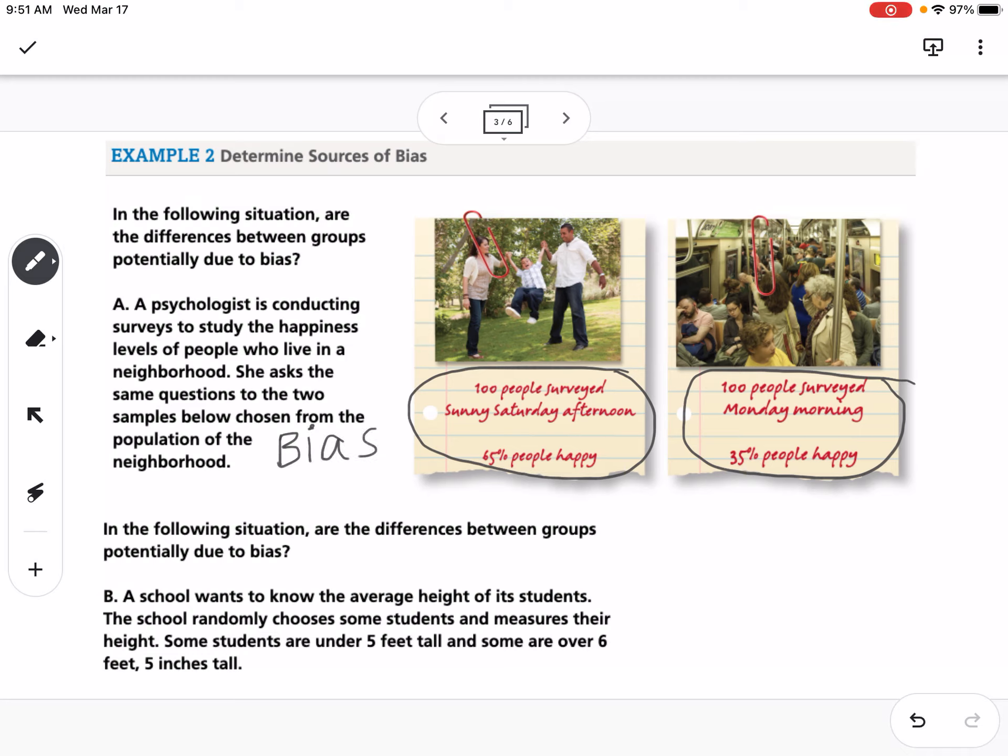In general, people are probably going to be happier. The weather could impact that, the day of the week could impact that, the time of the day, all of those things. If they're generally determining if these people are happy or not, they would need to do a more random sampling of their happiness at different times, different weather, all of that.